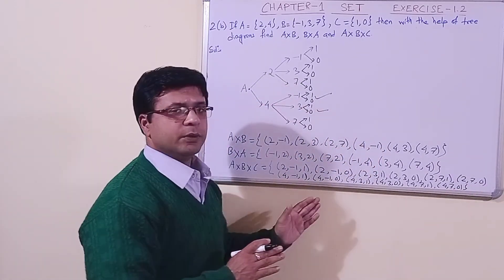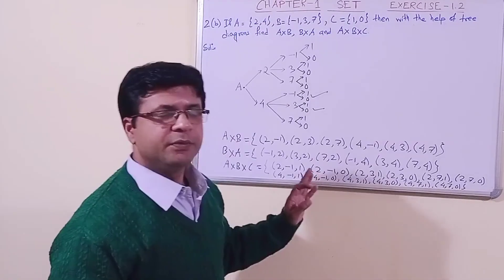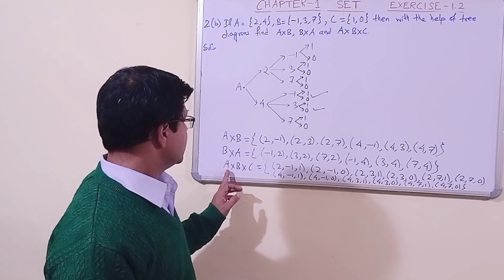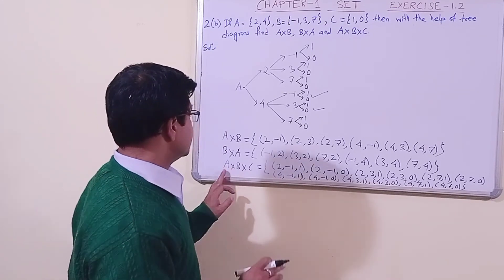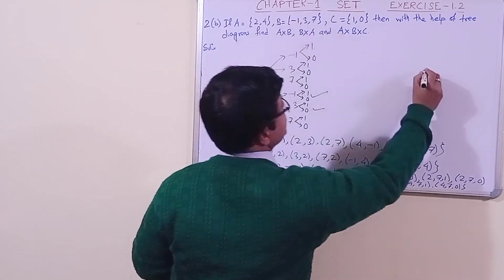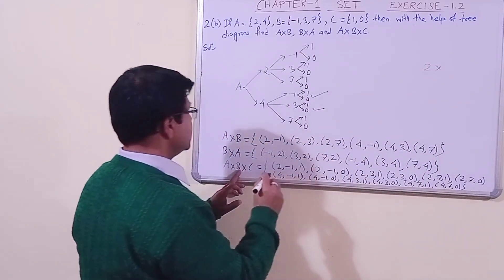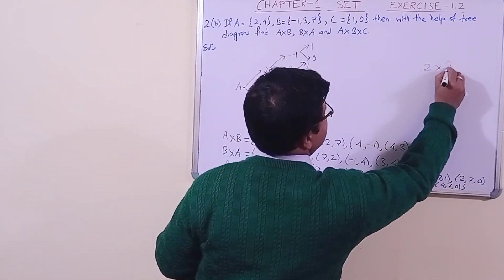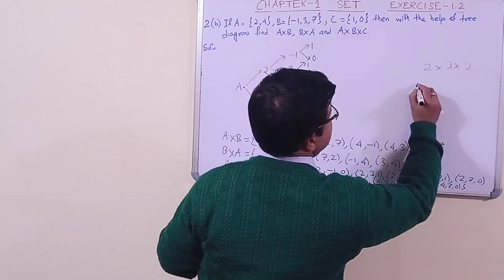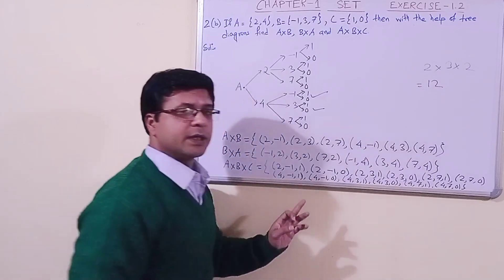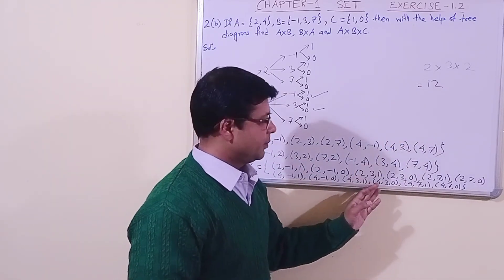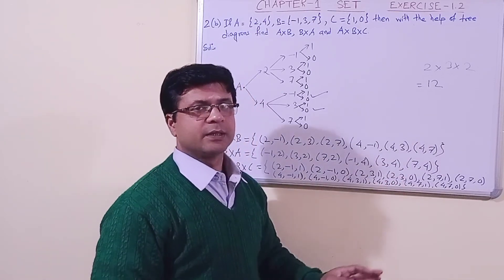If you draw the tree diagram, we can easily compute A cross B cross C. If you have a question about how many elements A cross B cross C will have: the number of elements in set A is 2, in set B is 3, and in set C is 2. So the total is 2 times 3 times 2, which equals 12 elements. If you get 12 ordered pairs, then your sum is correct.